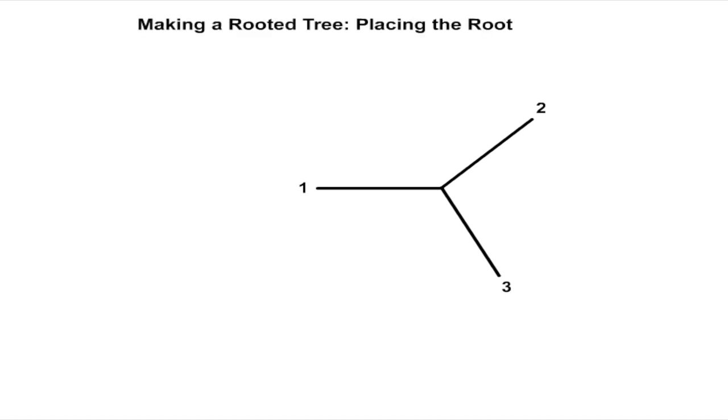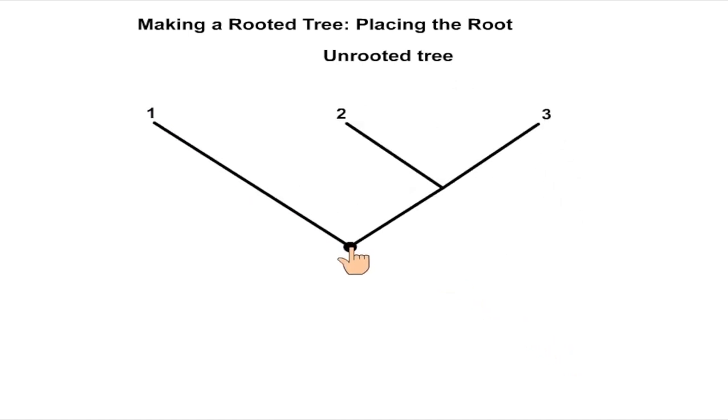Once an outgroup is chosen, placing the root is simple. Since by definition the outgroup branched off earlier, the root node is placed between the outgroup and the node connecting it to the other taxa under study.